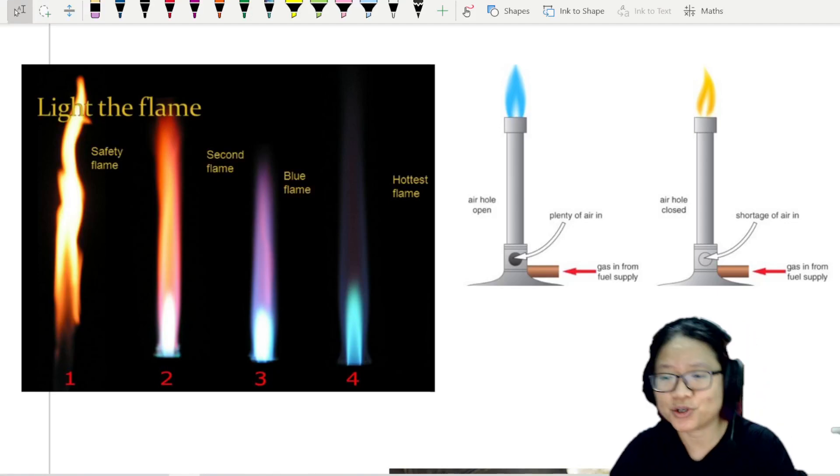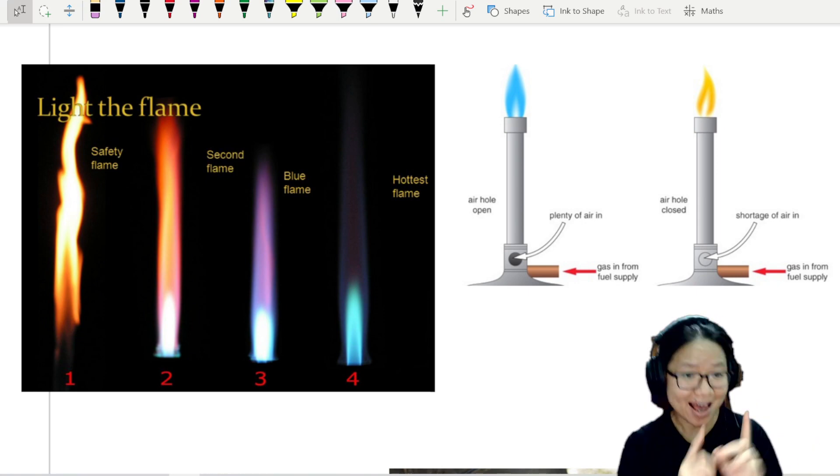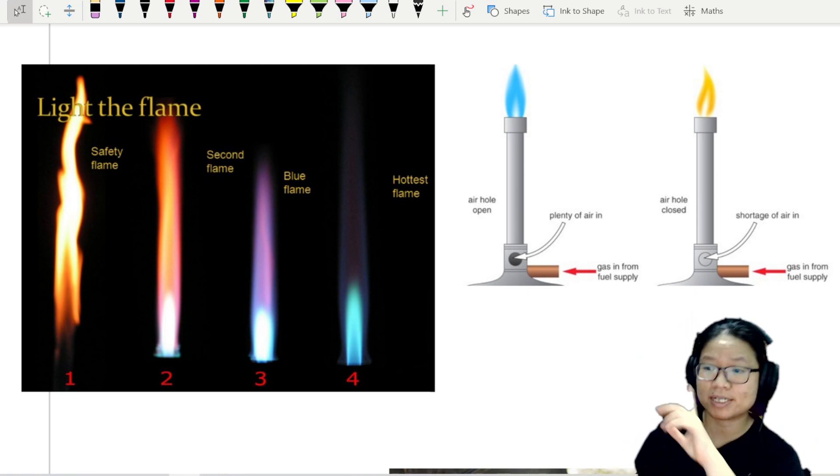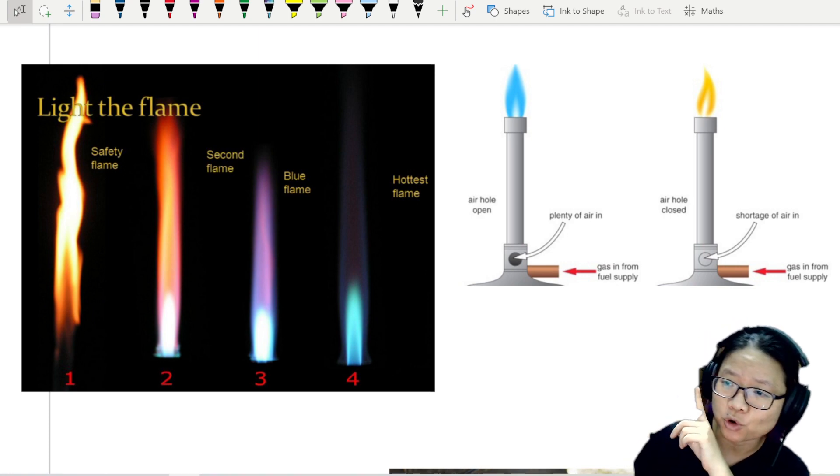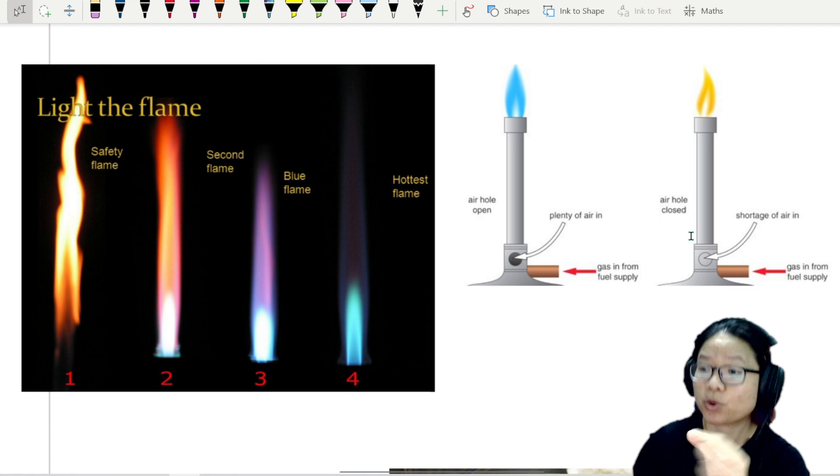If you've been in a chemistry lab before or any labs that require you to use a Bunsen burner, you would know the safety procedures. When we start the Bunsen burner, we have to close this air inlet. The reason why we want to close the air inlet is because we want the starting flame to be yellow.